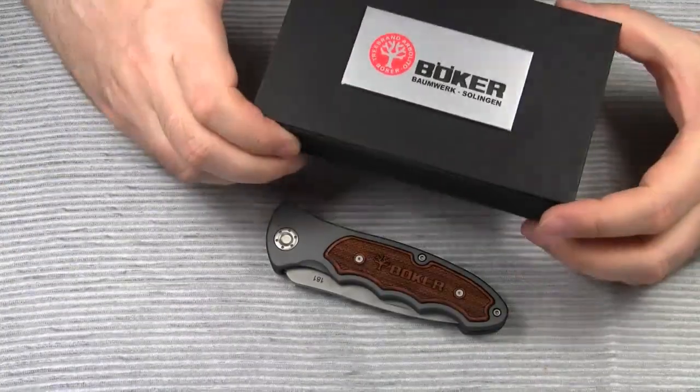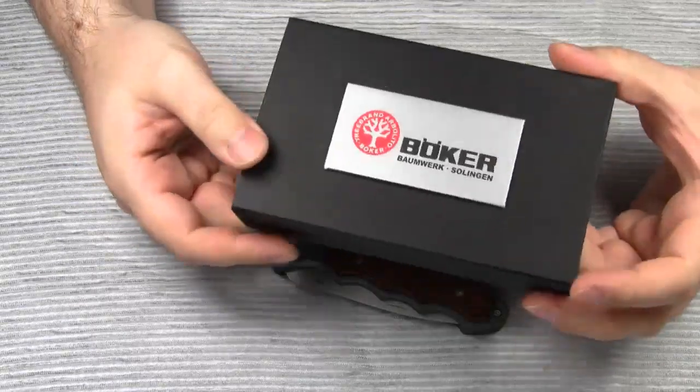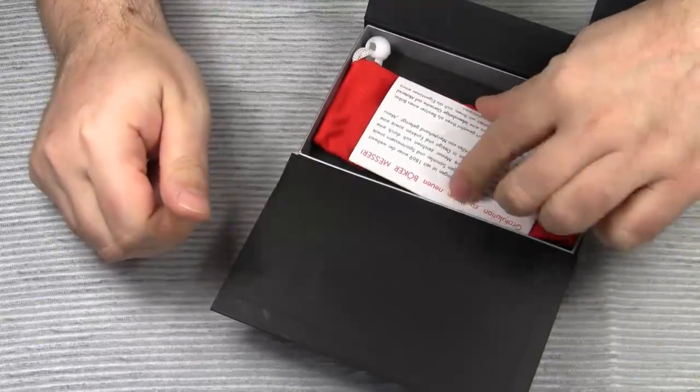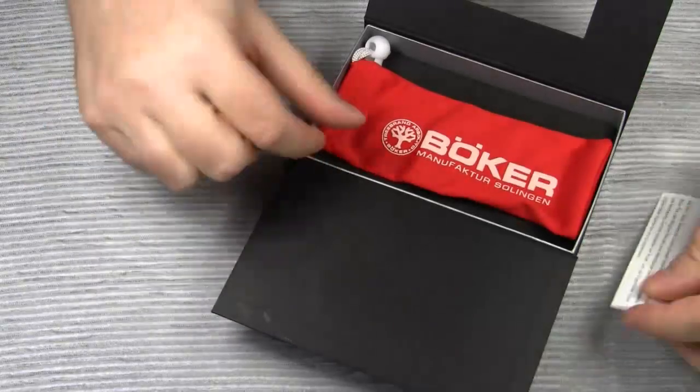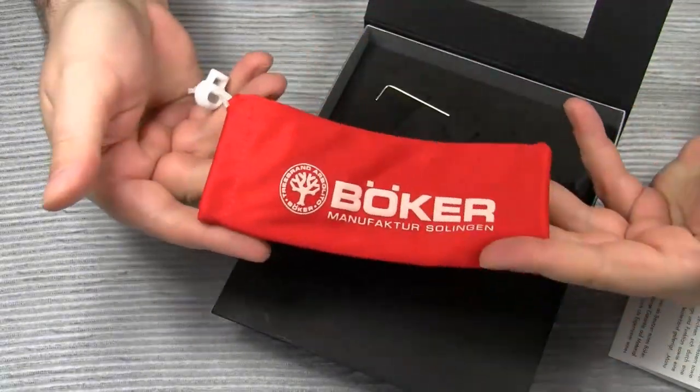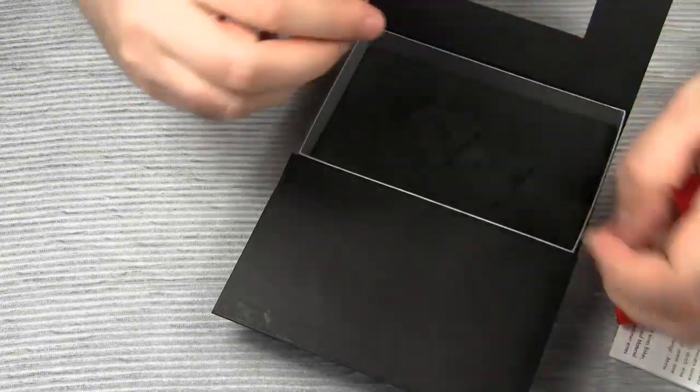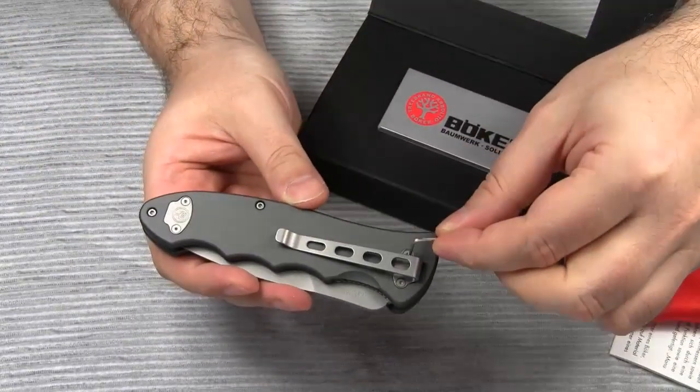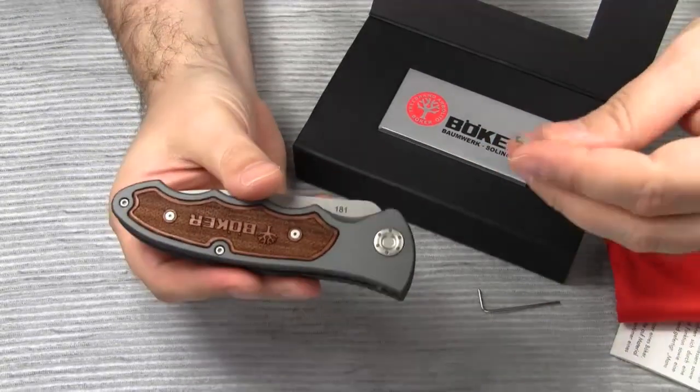Now for the knife itself. It comes in this beautiful presentation box. Along with the knife comes this little pamphlet, this red silk pouch, and two tools. One for the pocket clip screws, and the other one for this very unique pivot screw.